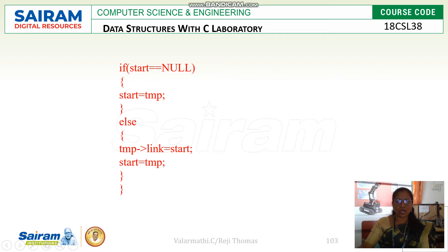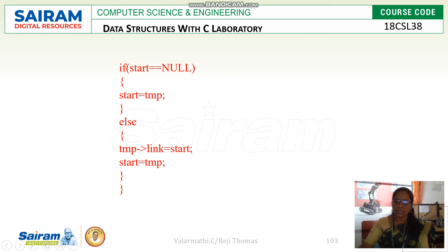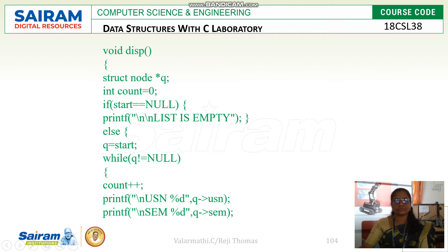Or else, if some nodes already exist, we should connect this temporary node to the previously existing node. To connect: temp->link equals start, then start equals temp. These two steps are used to connect the new node to the existing singly linked list.